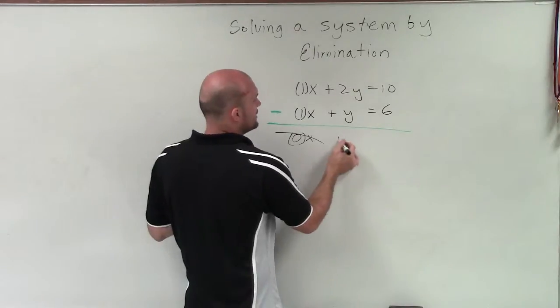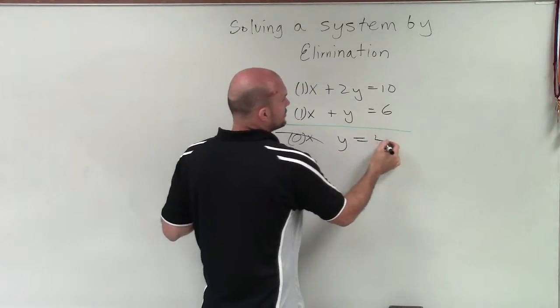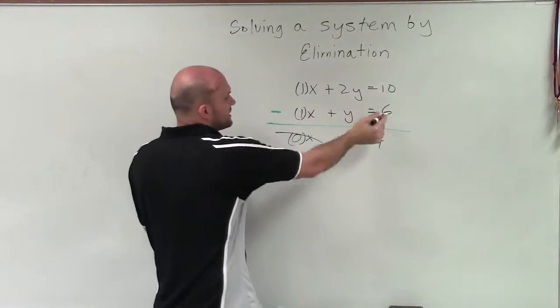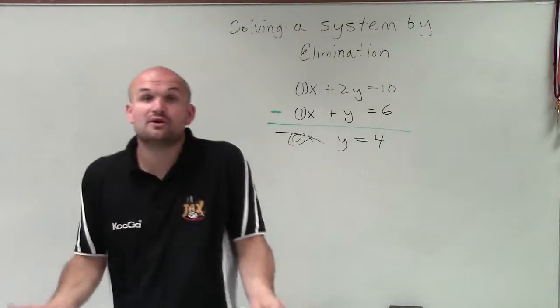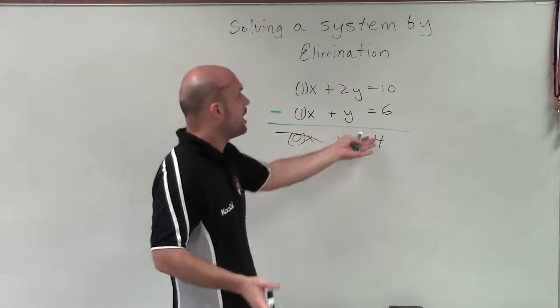2y minus y leaves us with y equals 10 minus 6 is going to equal 4. Therefore, now we know the value of y, which is 4.